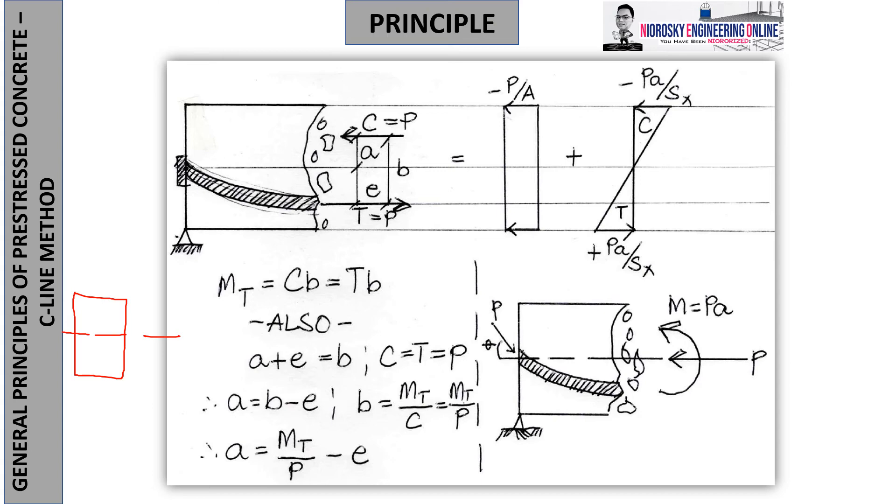When you have a beam with C here and tension T here, the moment at T, we say this distance is b.